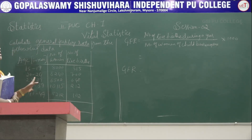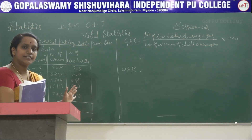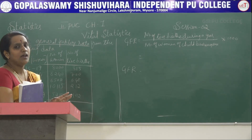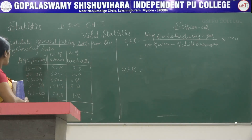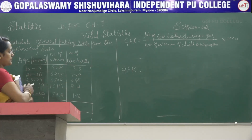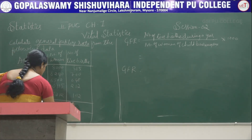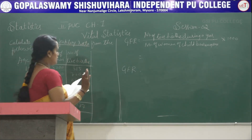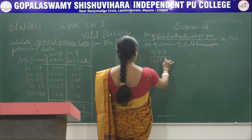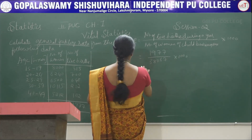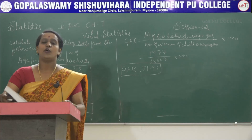In the next problem, it is very important to first check the age groups when calculating the fertility rate. We must identify and consider only the age group between 15 to 49. In this problem, the data already covers 15 to 49, so we can consider all the data. The total number of women is 38,067 and total births is 1,977. Substituting into the formula, the GFR is 51.93 births per 1000 women of childbearing age.